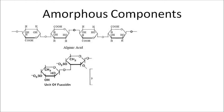In the Rhodophyta, the amorphous component of the wall is composed of galactans, or polymers of galactose, which are alternatively 1,3 and 1,4 linked, depending on which carbon of the monomer forms a bond with the other monomer. These galactans include agar, which is made up of agaropectin and agarose, and also carrageenan.